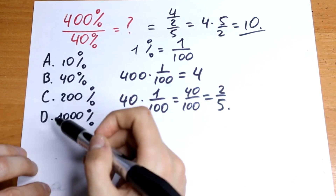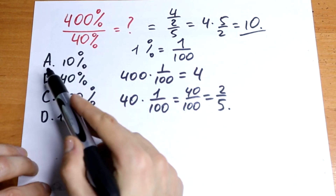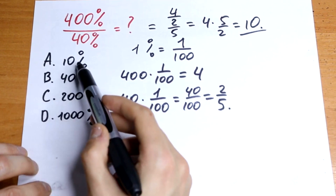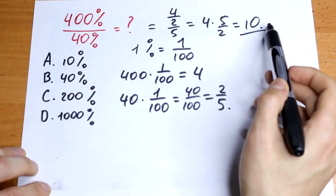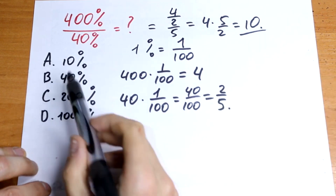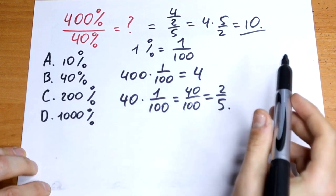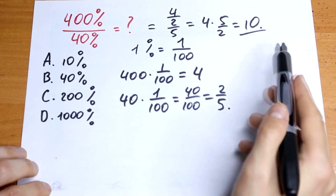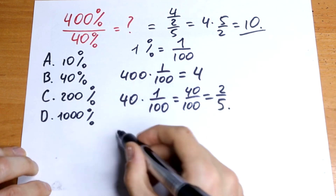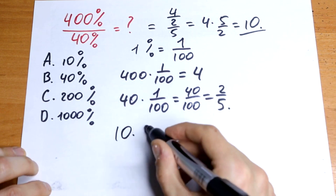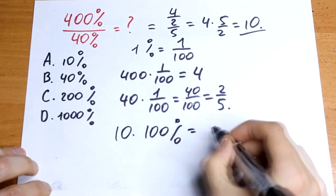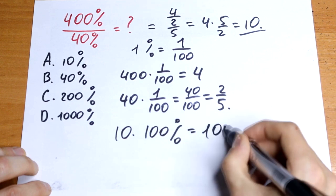Looking at the answer options, option A is wrong because it has a percent sign, but right here we don't have a percent sign — and all of these options have a percent sign. So if we need to convert this value to percent, we need to multiply 10 by 100%, and we will have 1000%.